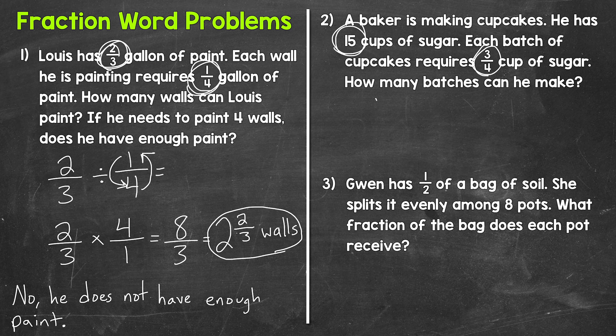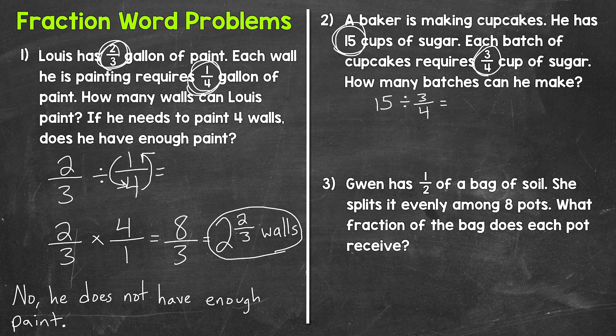So we need to do 15 divided by three-fourths. So let's keep, and I'm going to rewrite 15 in fractional form, so I'm putting it over one. That way we have a numerator and a denominator. This still equals 15, so we're not changing the value of 15 here. So keep, switch, and then flip. So 4 over 3.